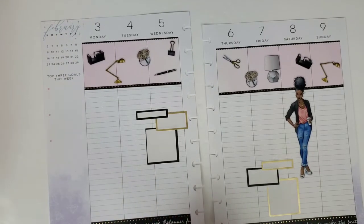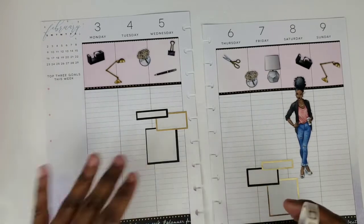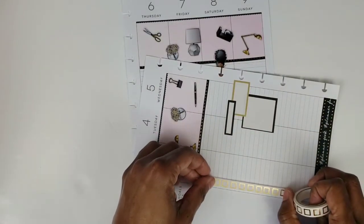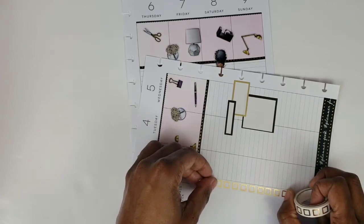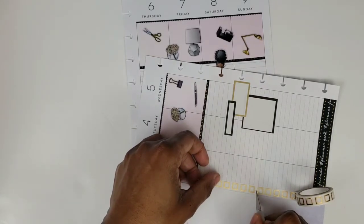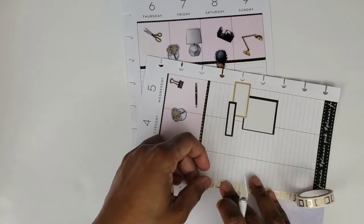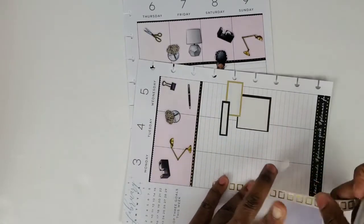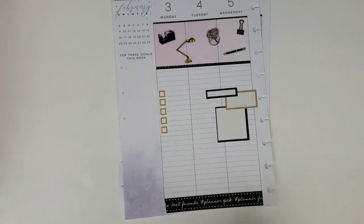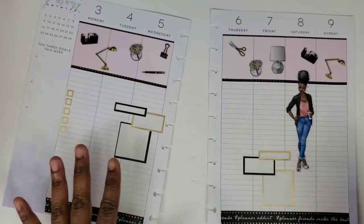Now I'm going to pull this washi and do my checklist. If I can find the start of it. I think that's it right here. And I'm going to put this on Monday. So I did five little check boxes there.